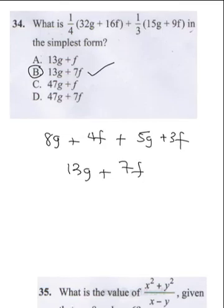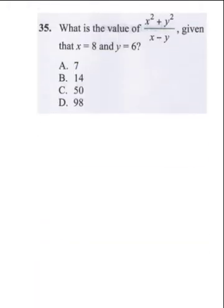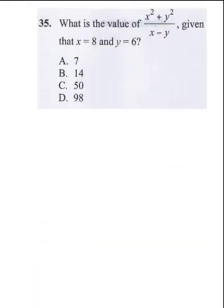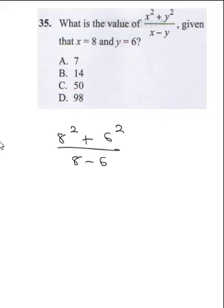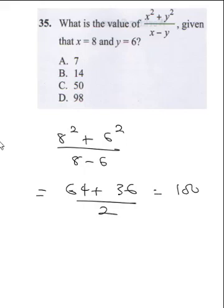The next question asks for the value of (x squared plus y squared) over (x minus y), given x equals 8 and y equals 6. Substituting: 8 squared plus 6 squared, all divided by 8 minus 6, gives 64 plus 36 over 2, which is 100 divided by 2. The final answer is 50. The correct answer is B.